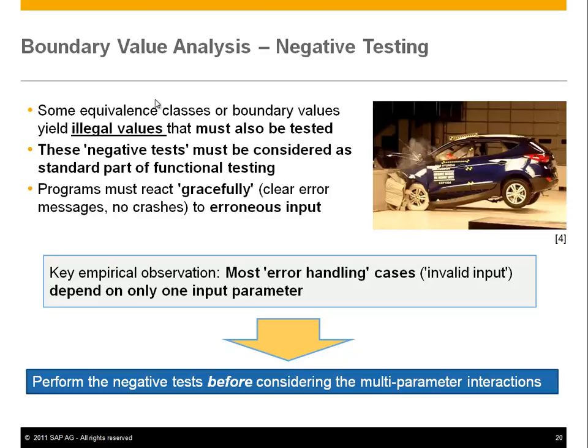Some error handling cases depend on two parameters, and we'll come to those later. Since most depend on one parameter, the negative tests are done at this stage: you look at the illegal values from boundary value analysis, write test cases for those, and then you can focus on only positive functional behavior for multi-parameter interactions.